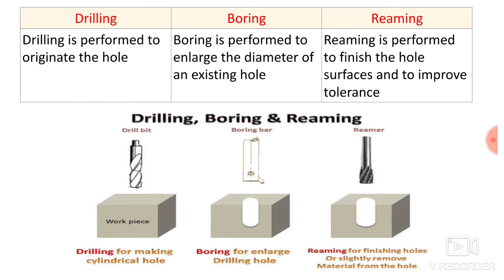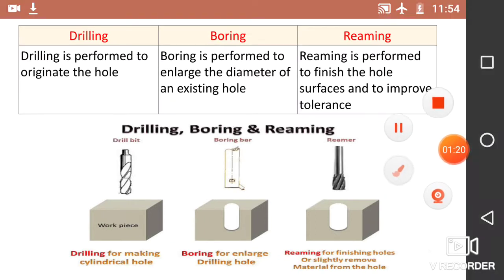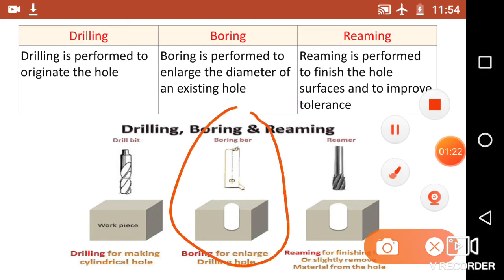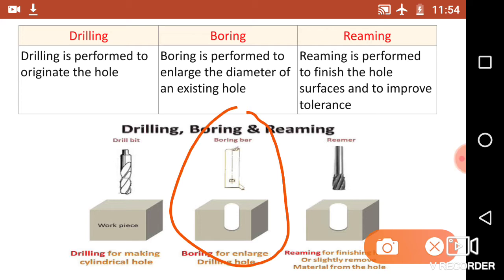The second operation is boring. Boring is performed to enlarge the diameter of an existing hole. Here with the second diagram you can see the boring operation. A boring bar is used, and boring is performed to enlarge the diameter of an existing hole. That means before boring operation you have to carry out a drilling operation and prepare a hole first. After that you can perform the boring operation to enlarge the diameter of that hole.